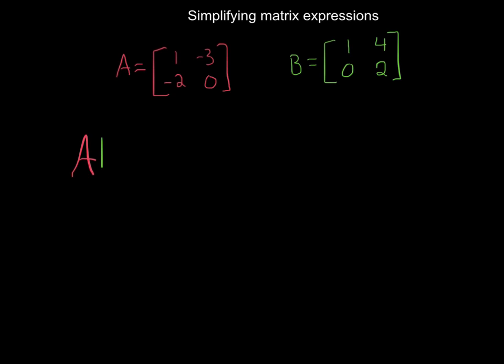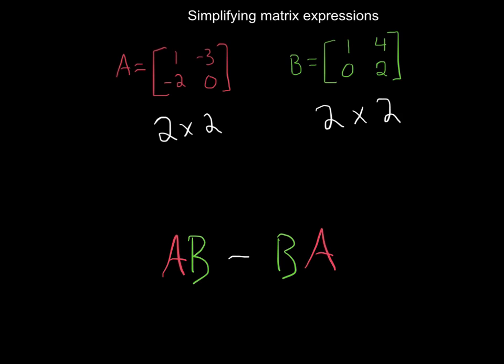So we had A times B. And we're going to subtract the multiplication of B times A. Now, we need to make sure that we can actually, in fact, do this multiplication. Now remember, in order to multiply two matrices together, we need to compare the inside numbers. So A times B, 2 by 2 is the A. And matrix B is 2 by 2. So the inside here is the same. So we can multiply these together.